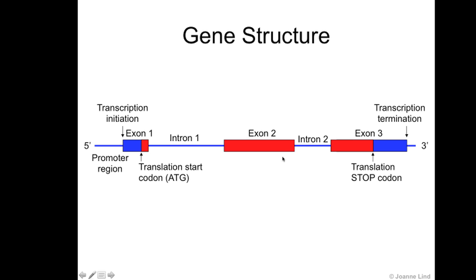So all in all, the gene structure is exons and introns. Exons being the expressed regions, introns not making it into the final sequence of the protein — so they don't code for the final sequence of the protein. And within those exon regions, you have transcription start and transcription end sites. And then within that region, you will have a translation start site and a translation end site.